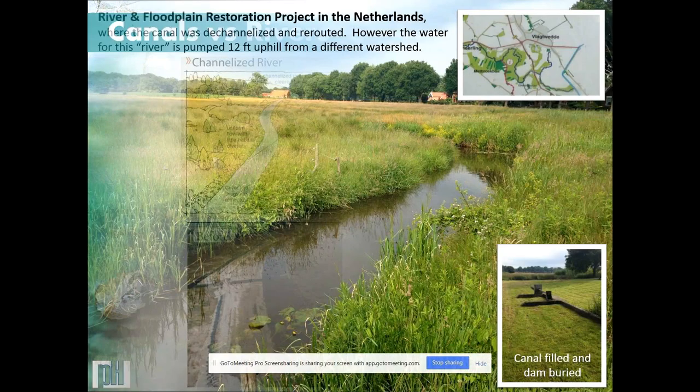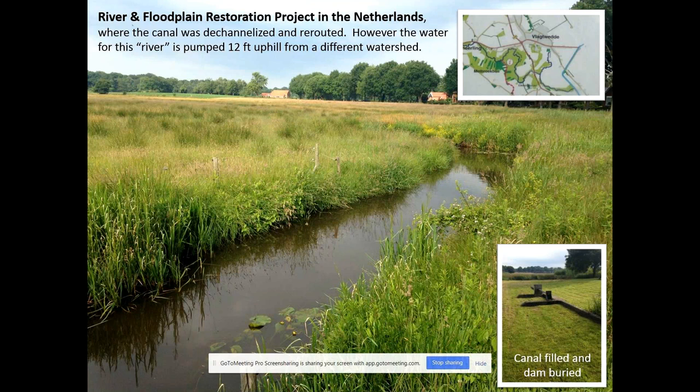Here's a Netherlands example where they had a canal river, filled in the canal, and redesigned an entire channel system through the valley. The interesting thing is the systems are so manipulated in the Netherlands that the water isn't even coming from the same watershed — it's pumped 12 feet uphill from a different watershed. So they're not restoring the natural system as it once was, but trying to recreate ecological value, with water quality issues associated with using water from a different watershed.